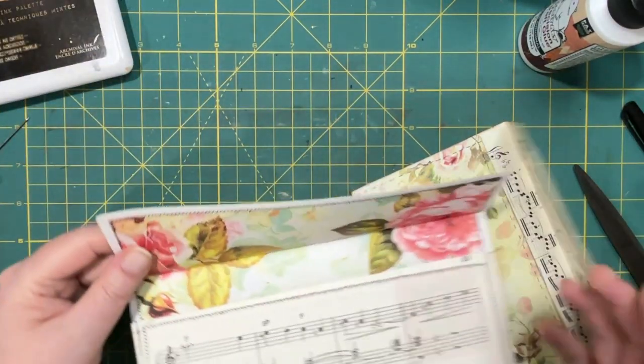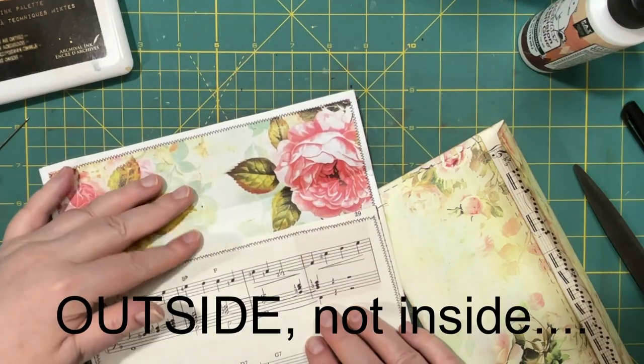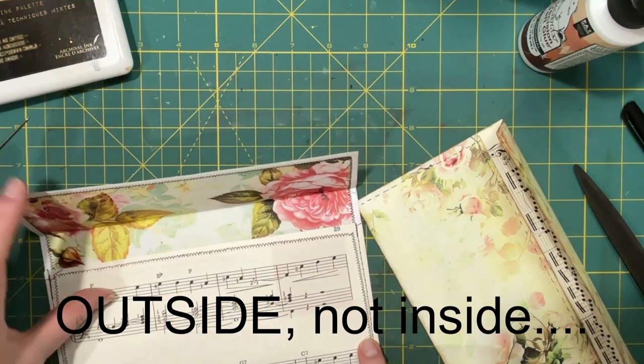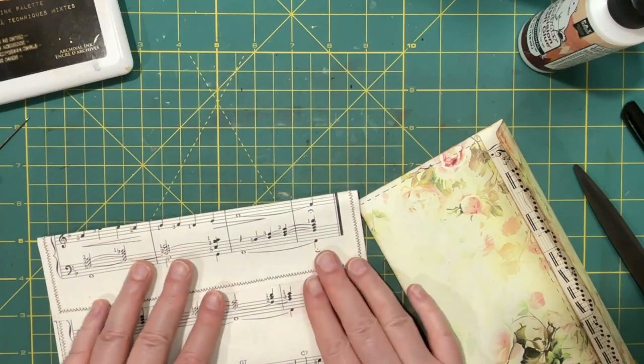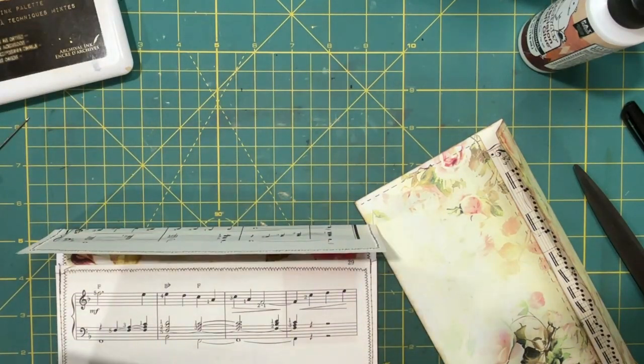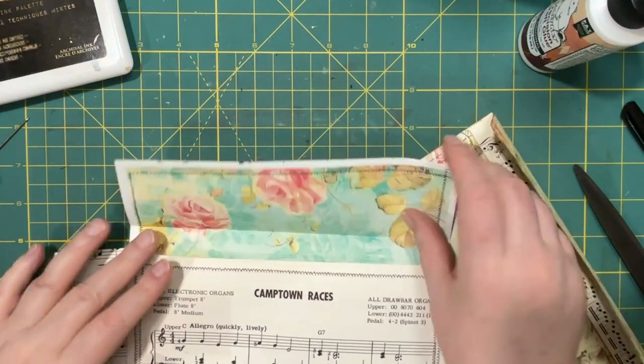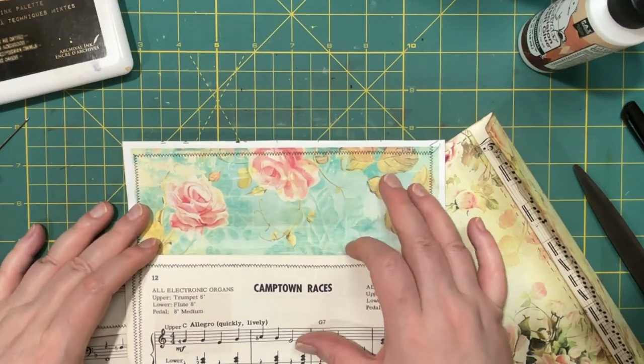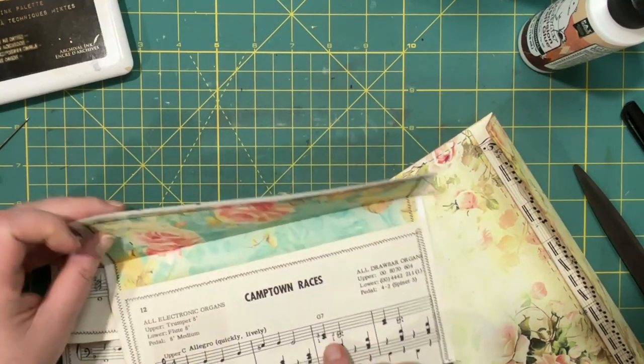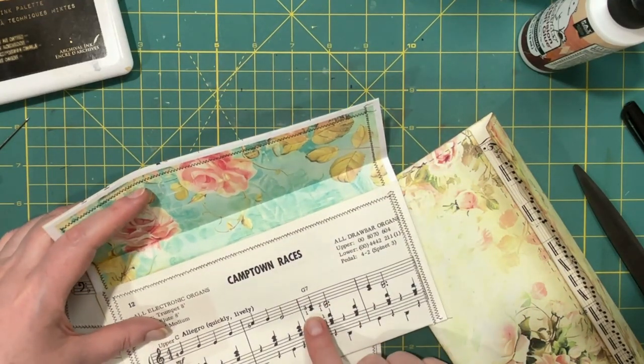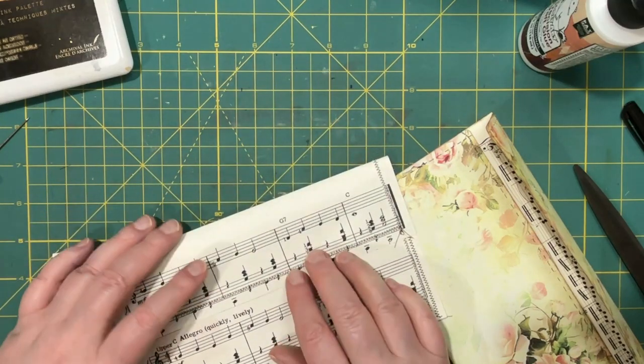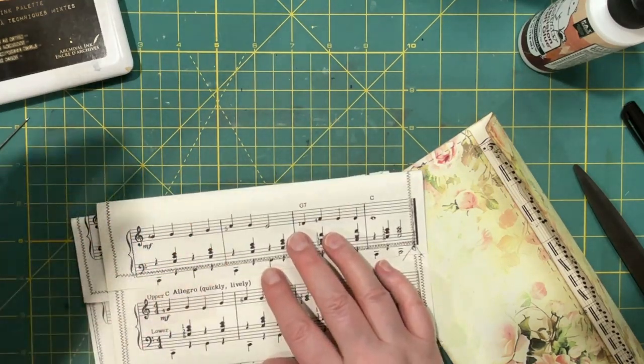That's my ideas journal. What else? I did this one; I put the music paper on the inside for this one and then I sewed it. Also not inked yet; they don't all have to be inked either. And this one I also lined with paper, the pretty paper on the inside.